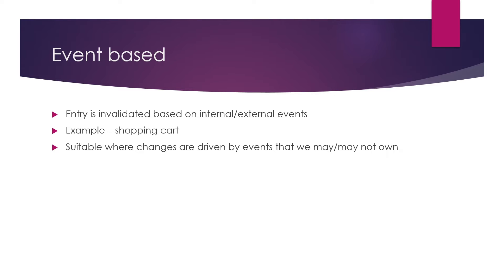Moving on, the next invalidation type is event-based. In event-based cache invalidation, entries are invalidated based on events or notifications. The caching layer listens to certain events, and whenever a relevant event occurs, the cache will invalidate or update the entries depending on the nature of that event. Consider we are building a cache for stock prices. We don't own the stock prices, so even though we cache those prices at time T, we want them to be up to date.